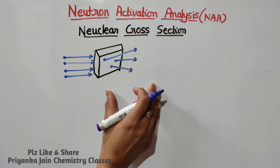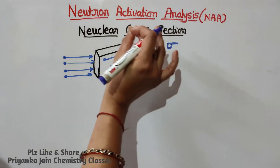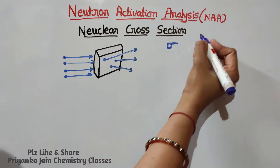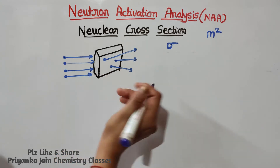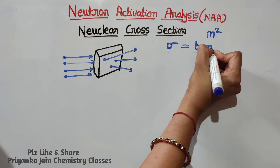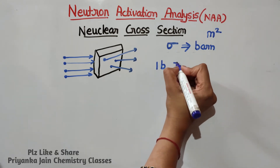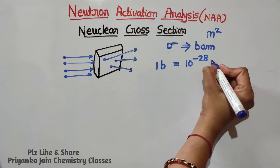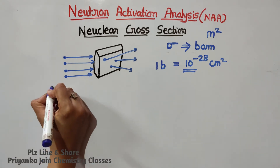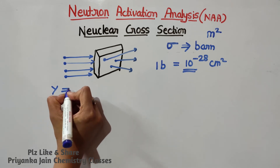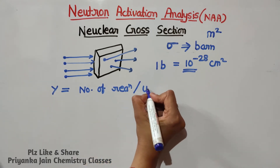The probability that a particular reaction will happen depends on the effective area of the target nucleus. Nuclear cross-section is the effective area, or the probability that a certain reaction will take place. It is denoted by sigma (σ). Its unit is the barn, a very small quantity, since we are dealing with a nucleus. One barn equals 10 to the power of minus 28 centimeter square. Y is known as the yield, or the number of reactions taking place per unit time.